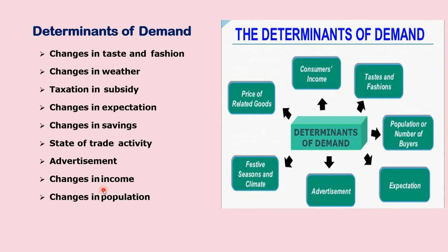The eighth determinant is changes in income. If there is an increase in income, there will be an increase in demand. If my income increases, my consumption also increases; if my income reduces, my consumption also decreases. The ninth determinant is changes in population. If there is an increase in the population, demand will also increase. If there is a decrease in the population, demand will also decrease. For example, if there are only two people in the house, very little food is needed, but if there are 10 people, the demand will be much more.